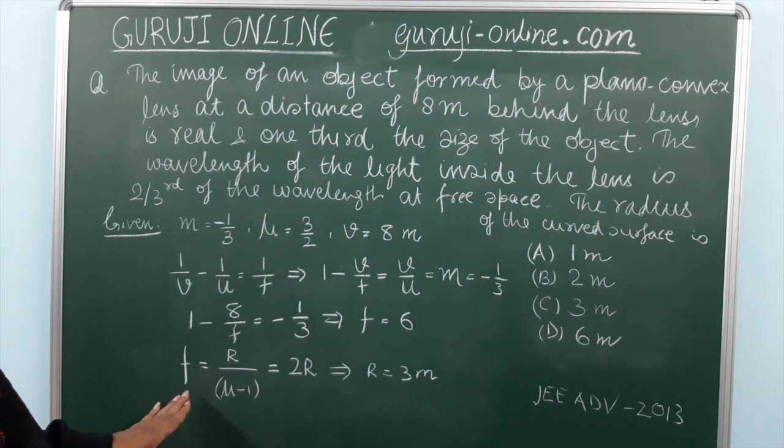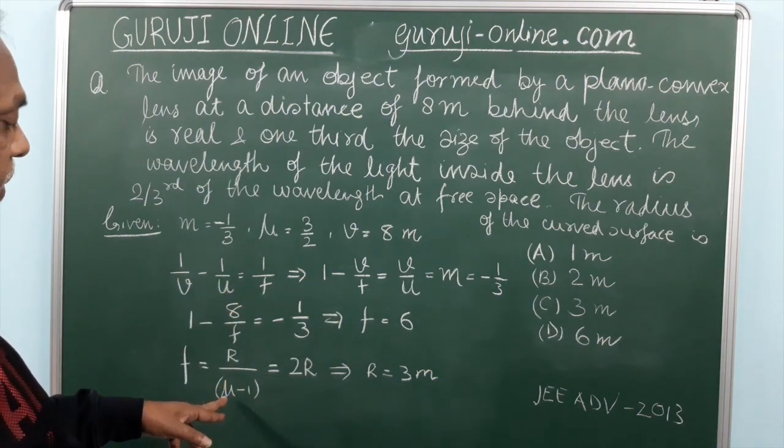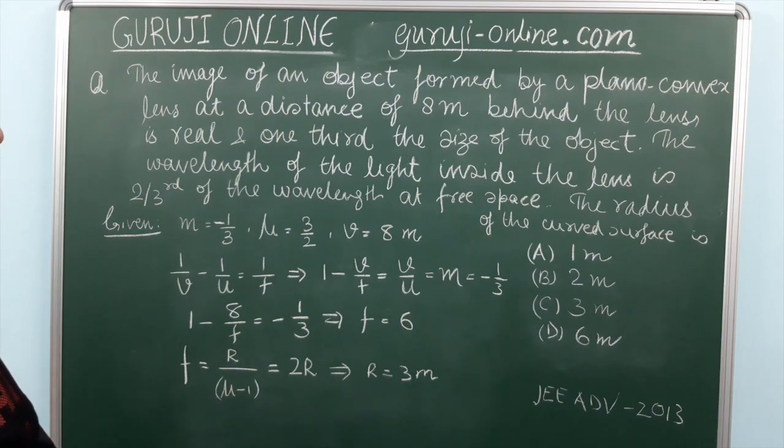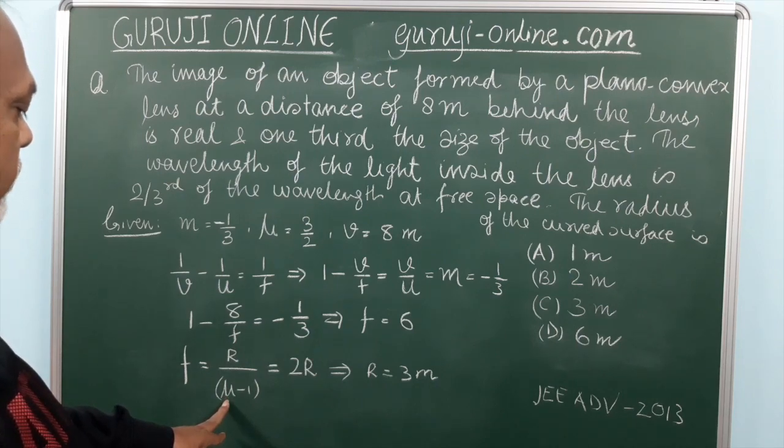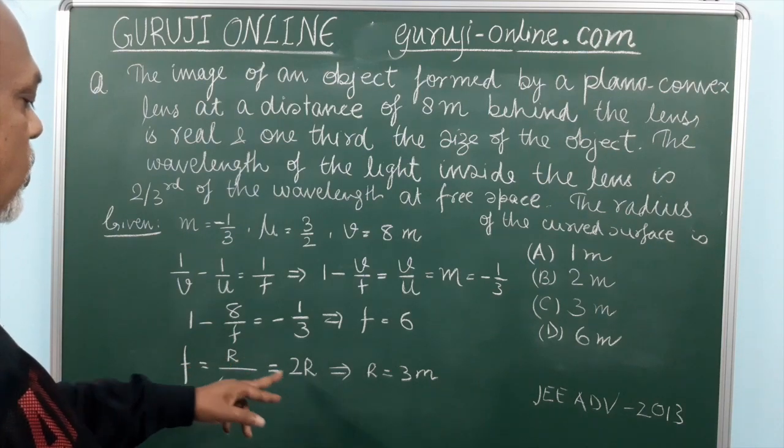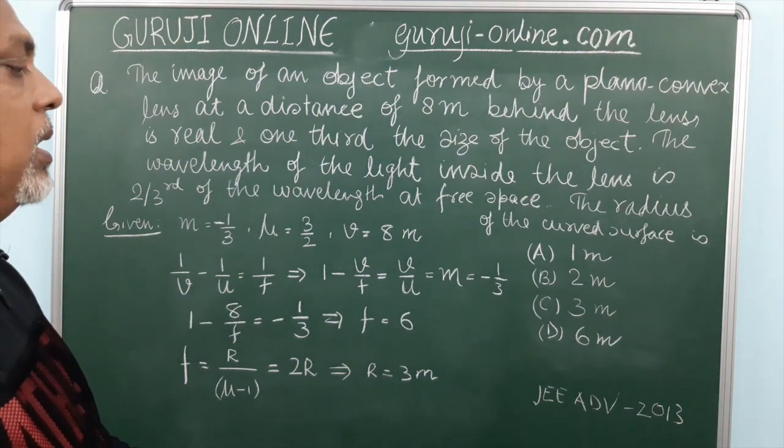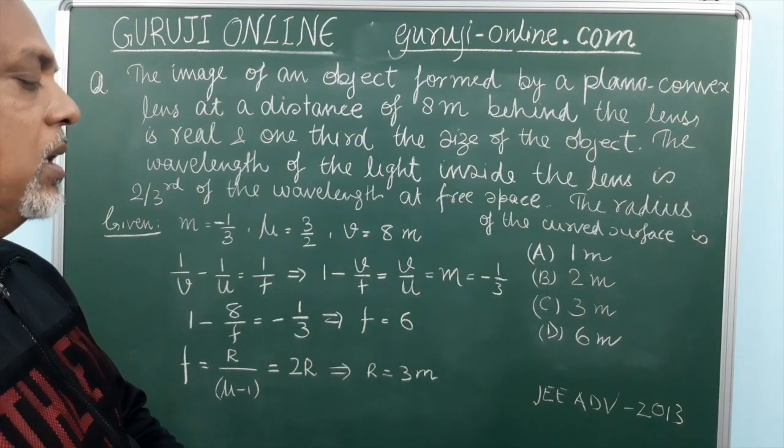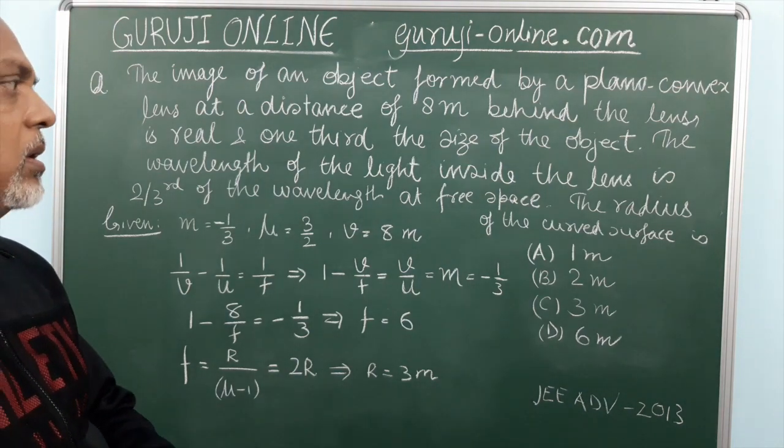So for plano-convex lens this is the formula: focal length is equal to the radius of the curved surface divided by mu minus 1. So this will give you if you put the value of mu as 3 by 2 it will be 1 by 2, which is 2 meter which will become 2R and R will be 3 meter. So this was a very simple problem. But it was asked in JEE Advanced 2013. So I hope you understood this problem.